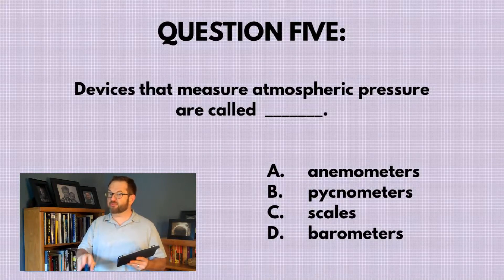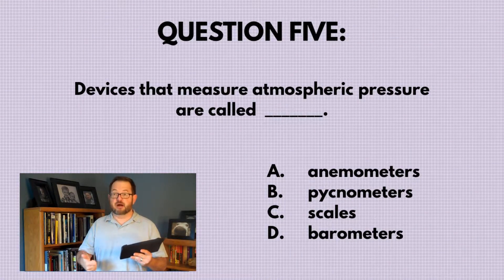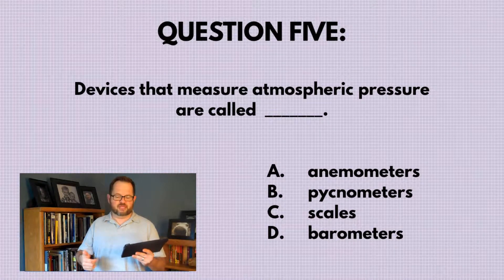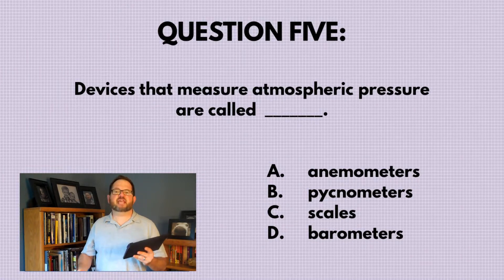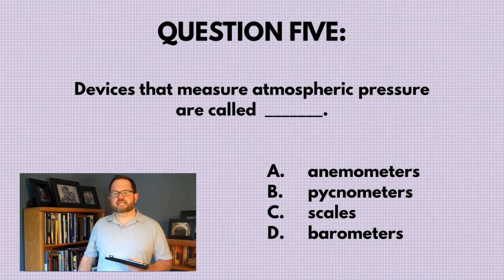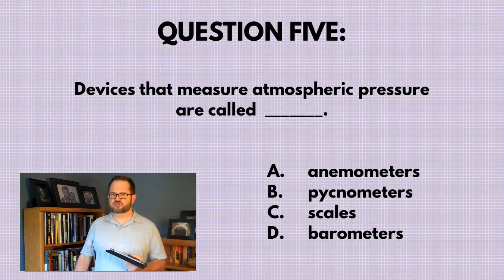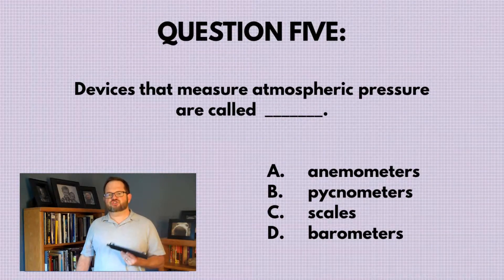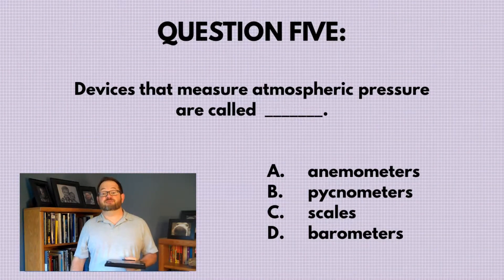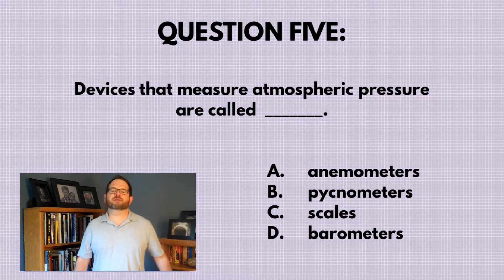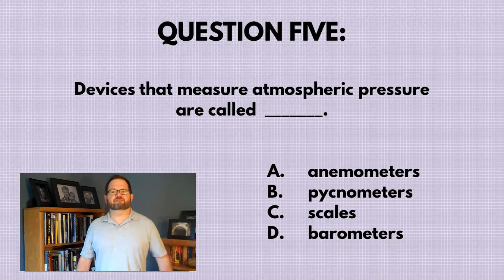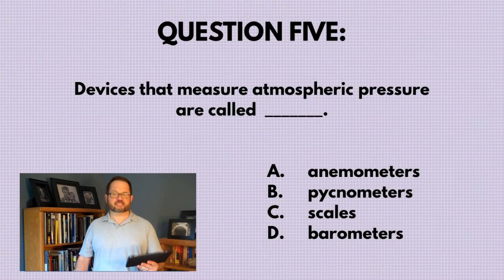devices that measure atmospheric pressure are called: A, anemometers; B, picnometers; C, scales; or D, barometers. Which instrument measures atmospheric pressure? Make a choice from those four options and get a little feedback before we move on to question six.